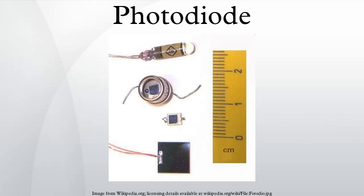Photodiodes are often used for accurate measurement of light intensity in science and industry. They generally have a more linear response than photoconductors. They are also widely used in various medical applications, such as detectors for computed tomography and instruments to analyze samples.